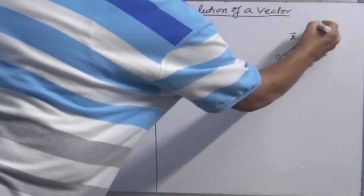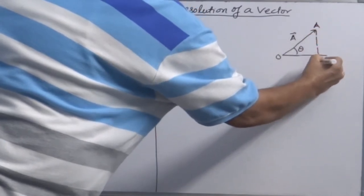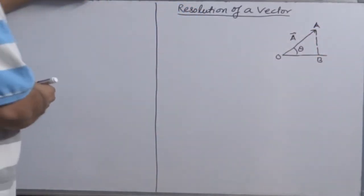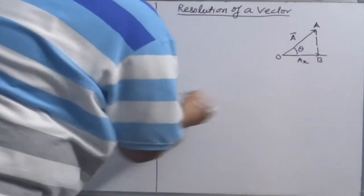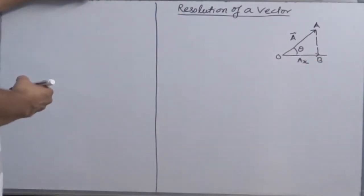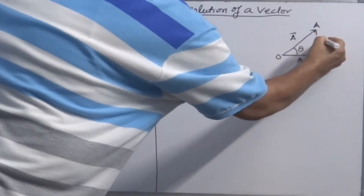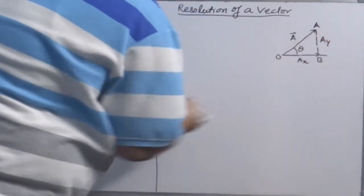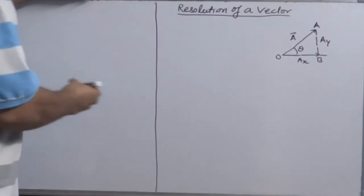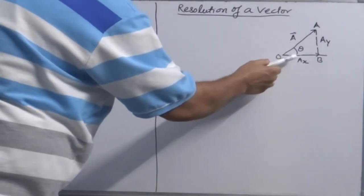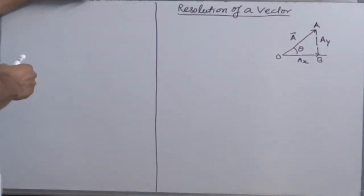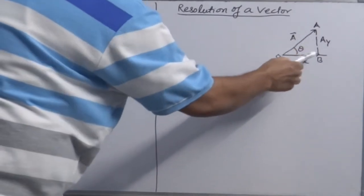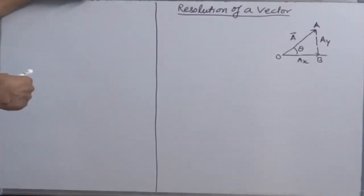Suppose vector A is given and it makes an angle theta with the horizontal. OA is a vector. We drop a perpendicular from A on horizontal line. Now we can say this vector OB is one vector that is along X axis, Ax vector. AB is vector along Y axis, so I name it as Ay vector. We can easily say now that vector A is the resultant of vector Ax and vector Ay.